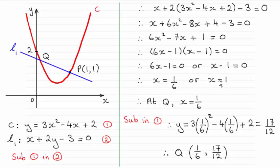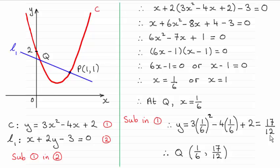You could also get these answers using the quadratic formula. We know x can't be 1 because that's the x coordinate at P, so at Q the x coordinate must be 1/6. All we need to do is substitute x = 1/6 into equation 1 — it's the easiest because it gives us y straight away. Substituting gives us y = 17/12 for the y coordinate of Q. Thank you.